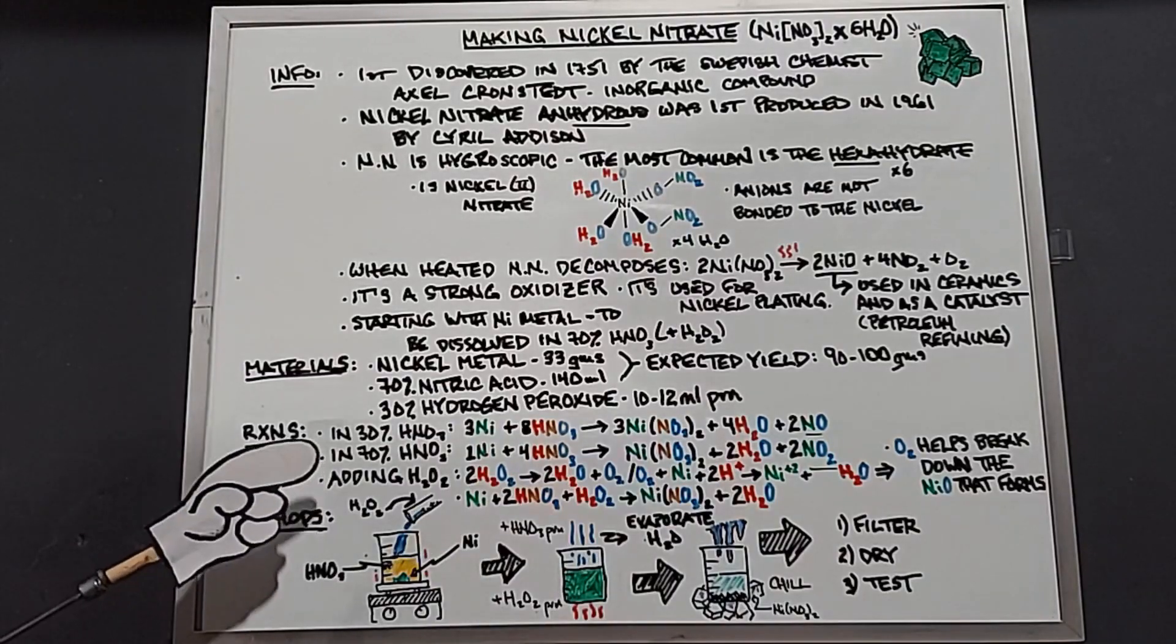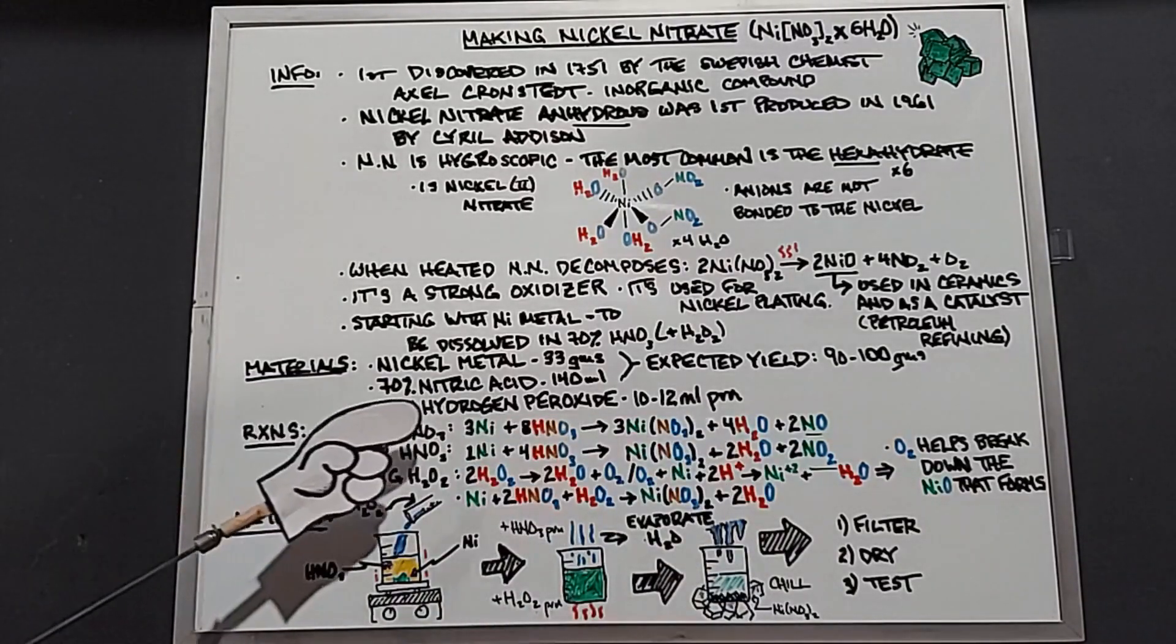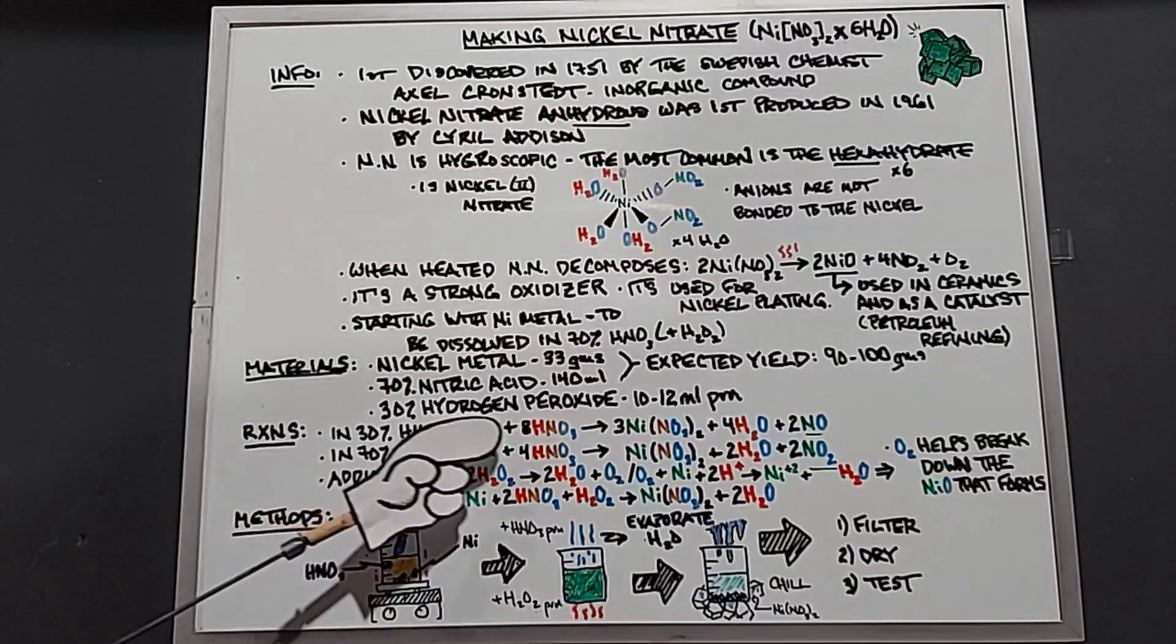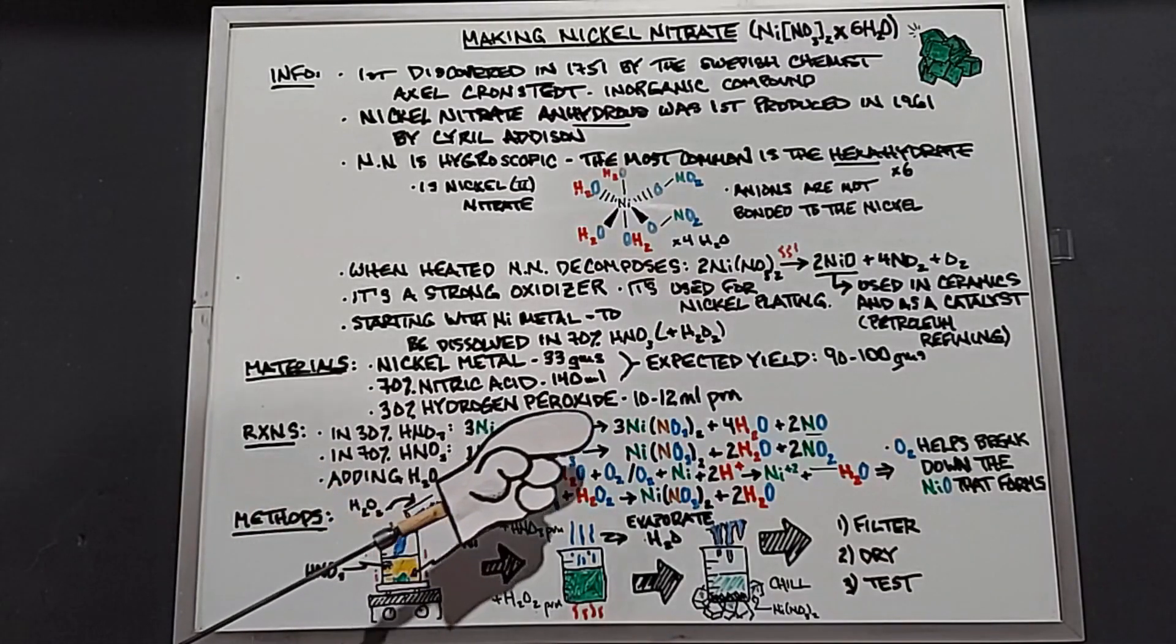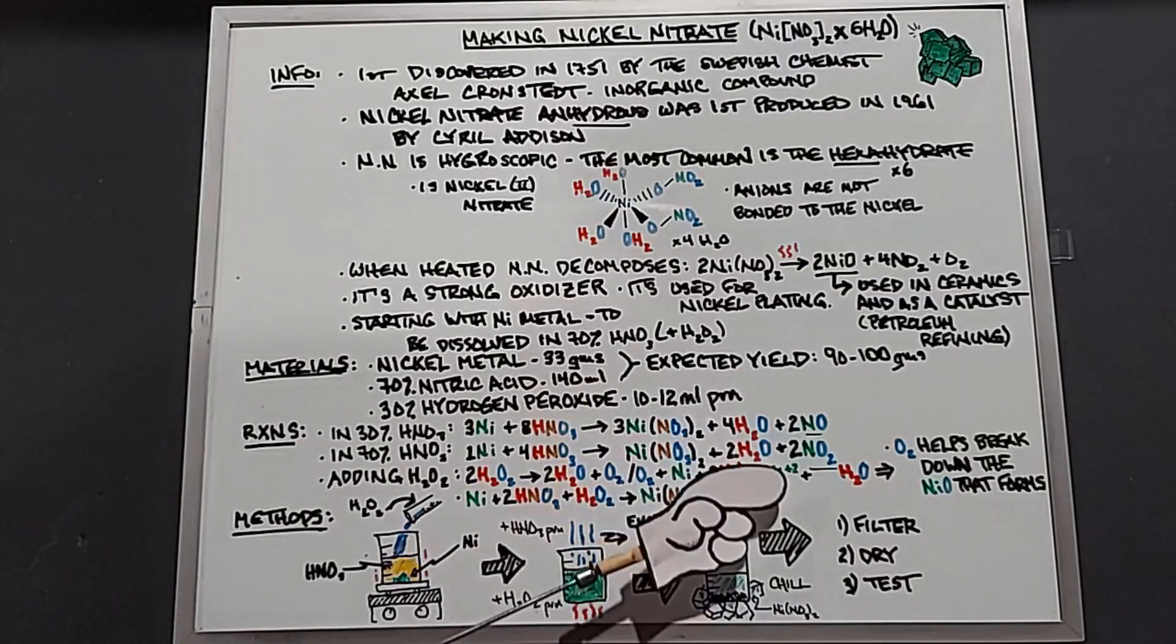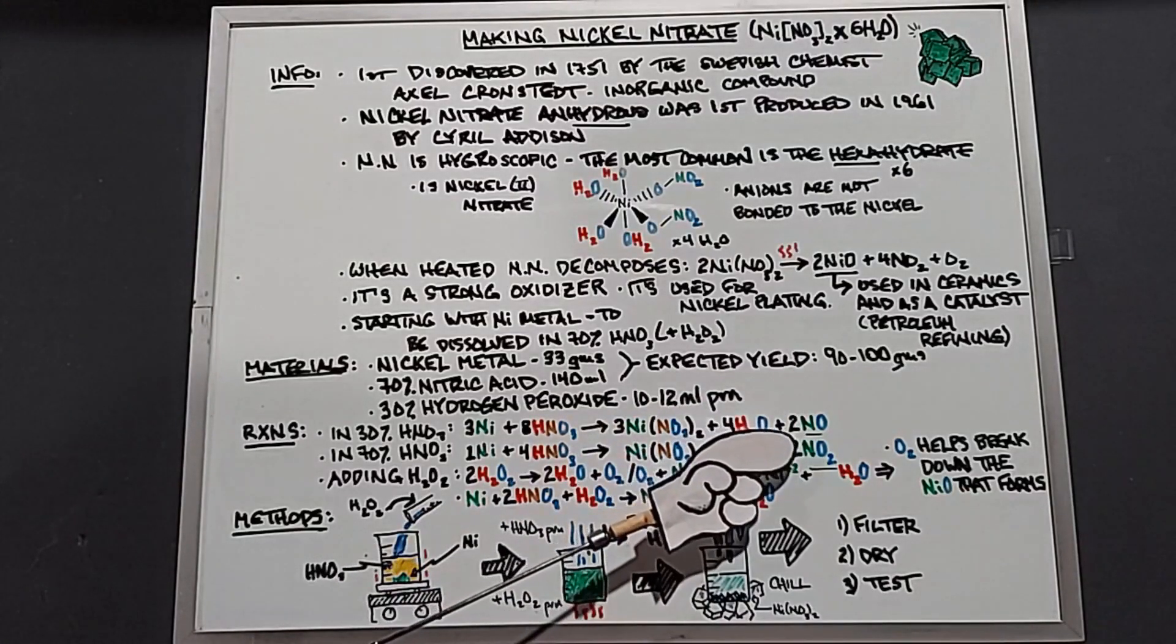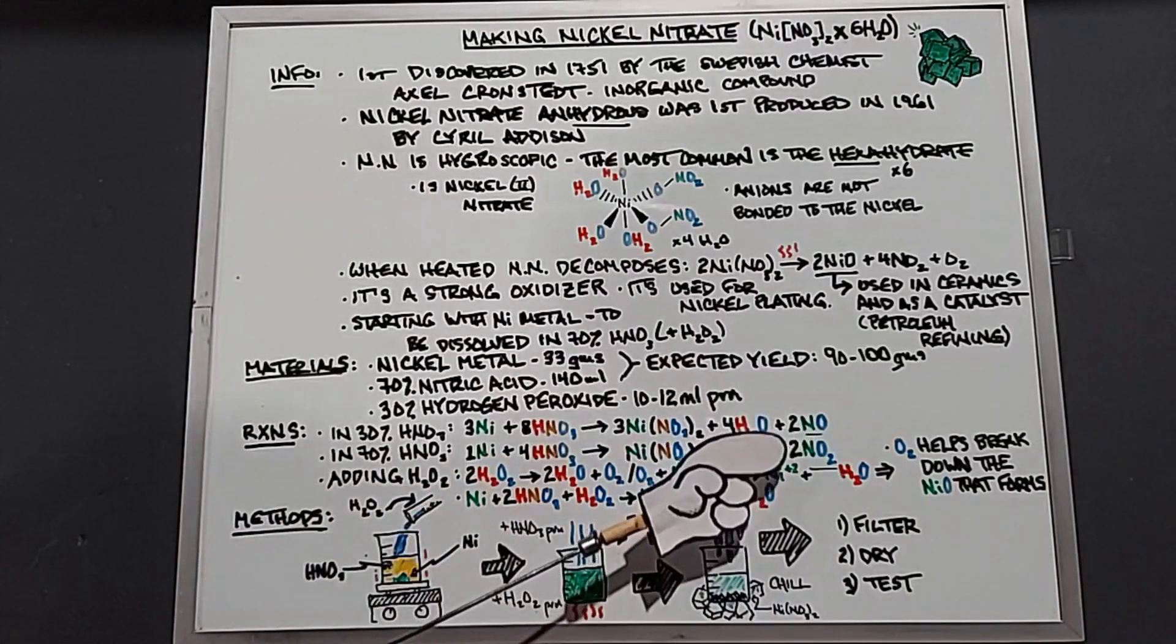Covering the reactions real quick, I have two equations here for different concentrations of nitric acid. The first one is for 30%, second one for 70% or concentrated. You can see the amounts vary a little bit as far as how much nickel and nitric acid is needed. We get nickel nitrate here, waters here, and at the very end is the only real difference: this forms nitric oxide and this forms nitrogen dioxide. We'll be using the 70%, so we need to watch out for the nitrogen dioxide.